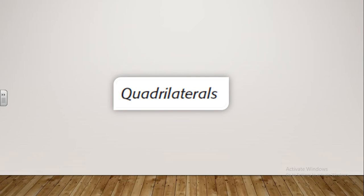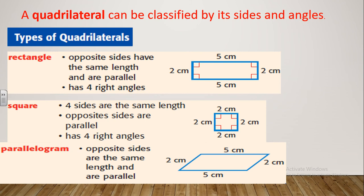Hello, my dear students. Today we will talk about quadrilaterals. What do we mean by this? It means the shape that has four sides. You should know that quadrilaterals can be classified by their sides and angles. Let's see some types of quadrilaterals.